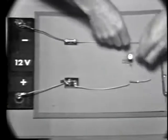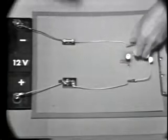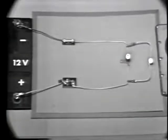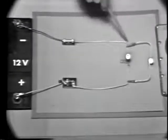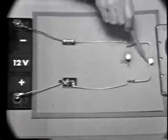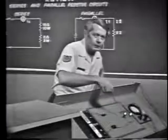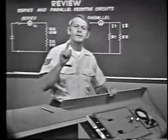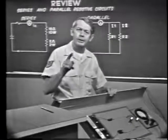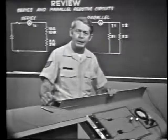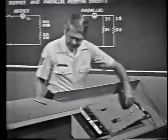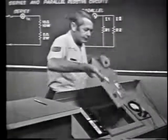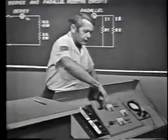If another bulb is added, we create an additional current path and change from a series circuit to a parallel circuit. Current now divides at this point, some going through this bulb and some through the other. A series circuit has only one path for current; a parallel circuit has more than one path.